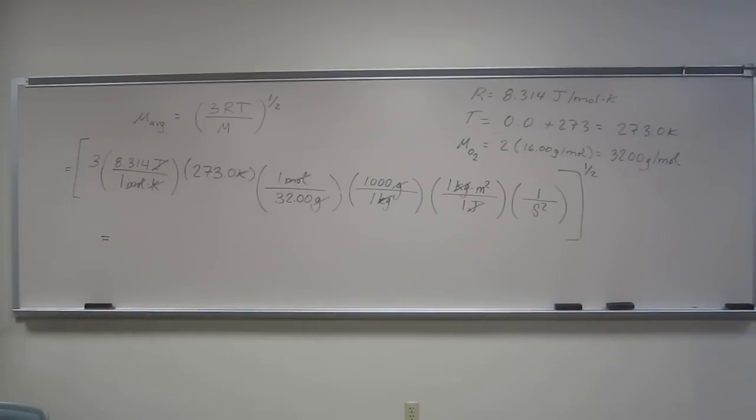And now let's just get out your calculator and start calculating. So 3 times 8.314 times 273 divided by 32 times 1,000. And take the square root of that number.